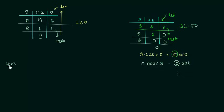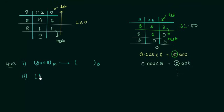I have two homework problems for you. In the first homework problem the decimal number is 2048 and you have to find the octal equivalent of 2048. In the second problem the decimal number is 82.250 and you have to find the octal equivalent. Post your answers in the comment section. This is all for this presentation — see you in the next one.